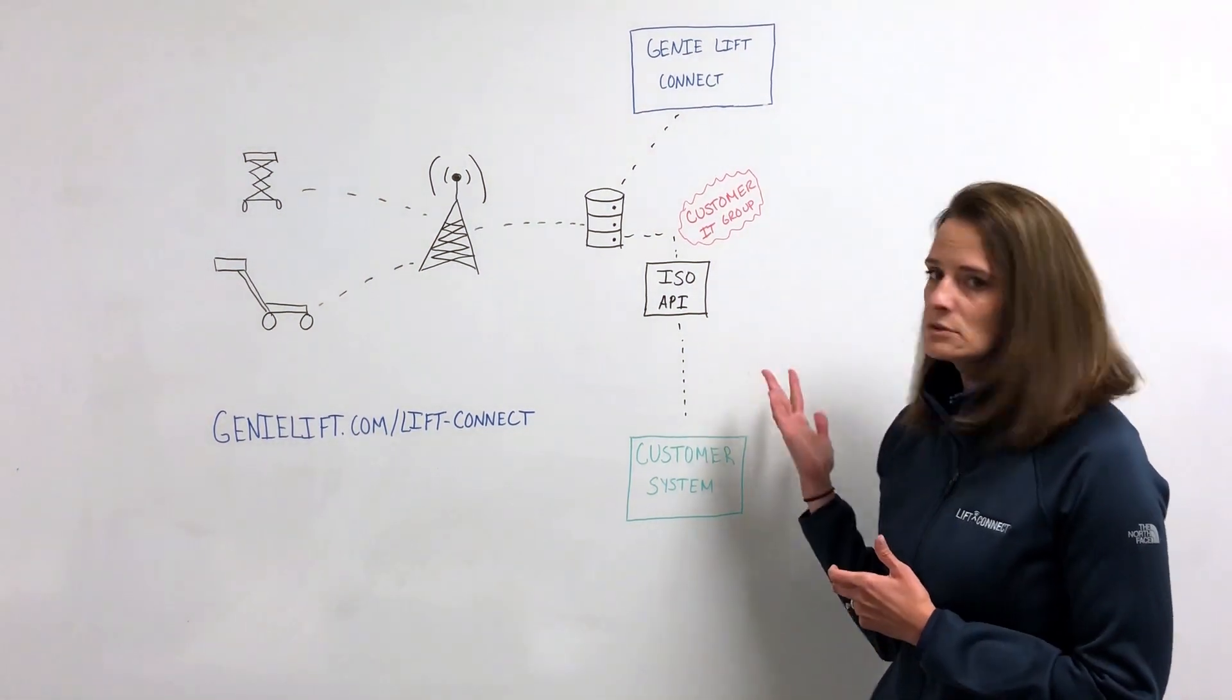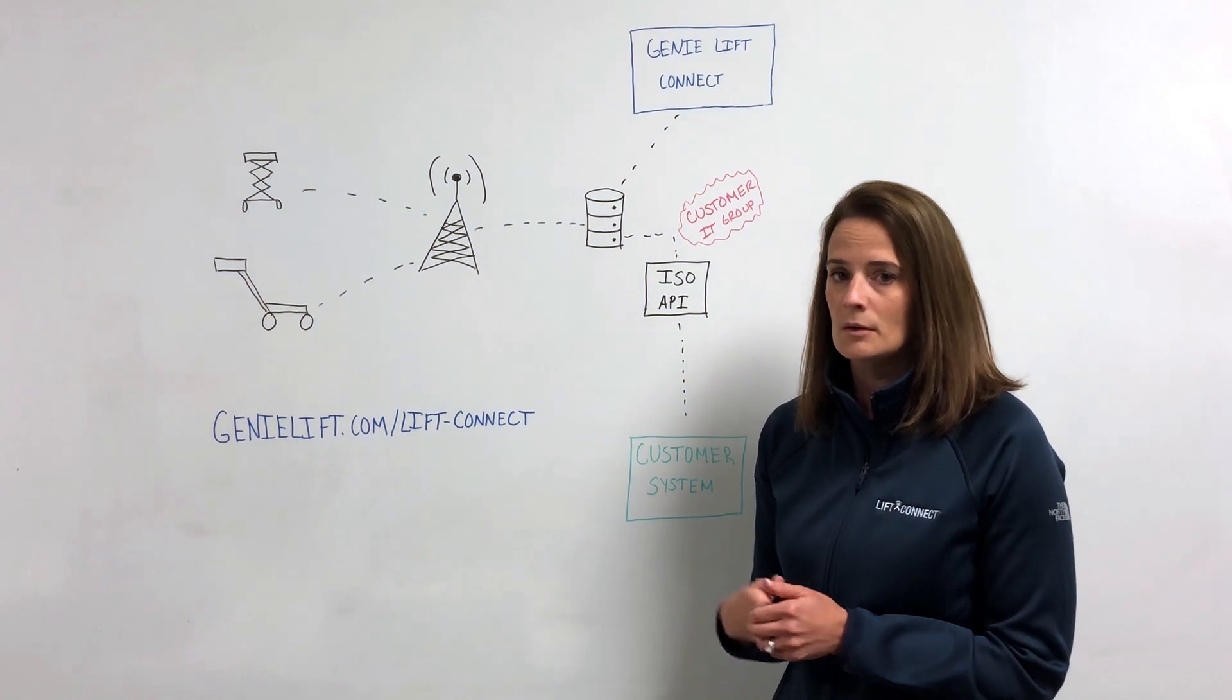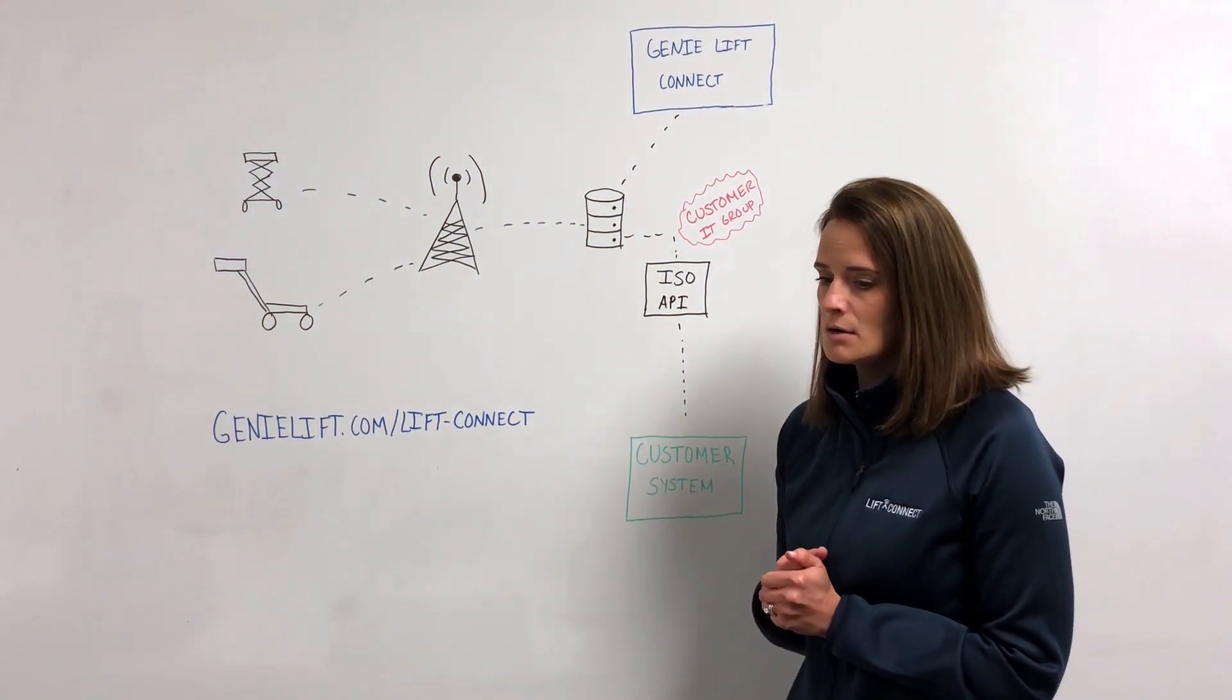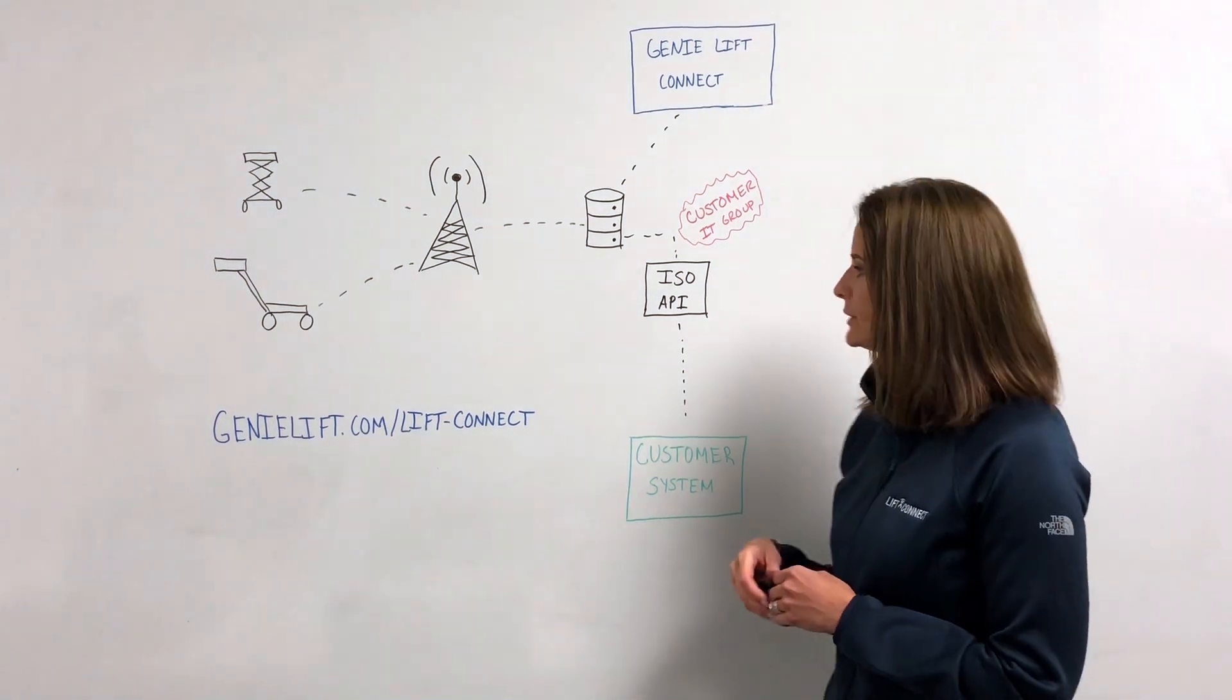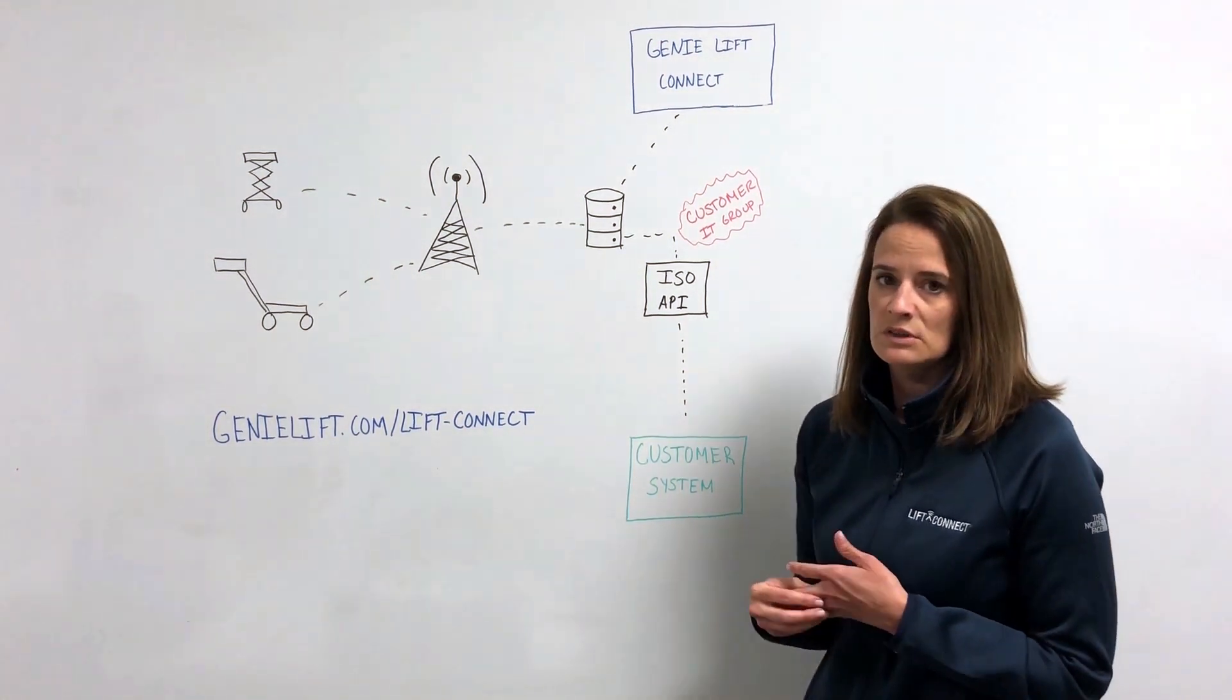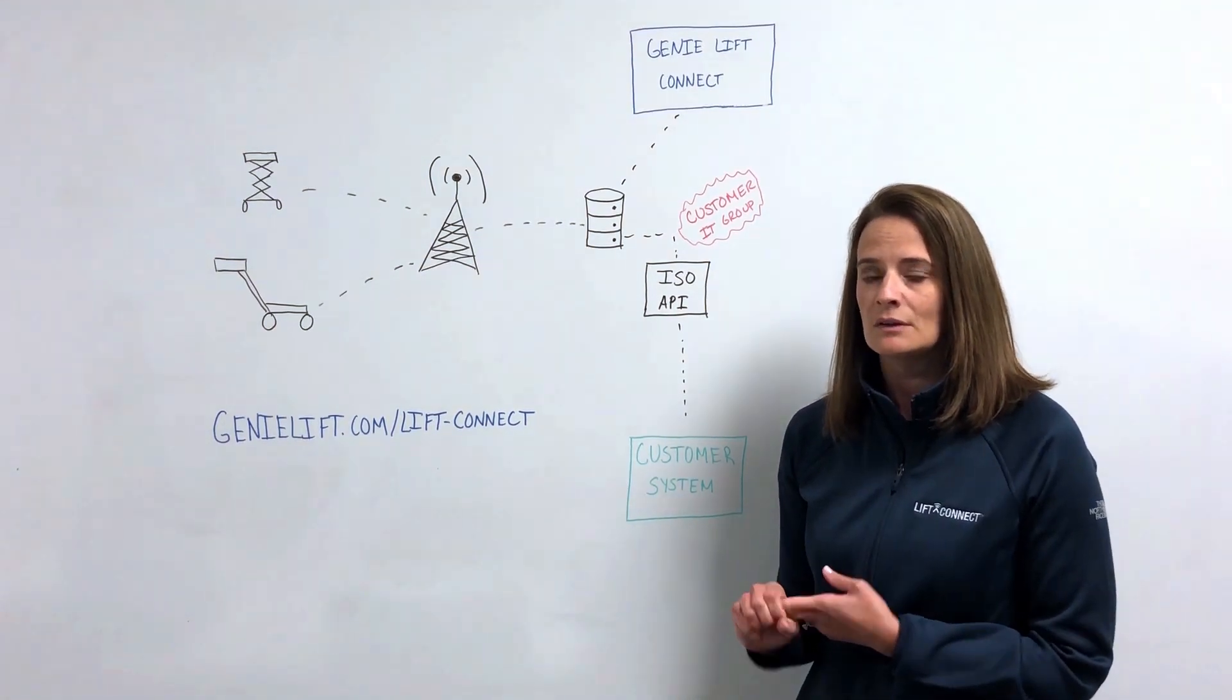So the way this works is customers let us know through the GenieLift.com LiftConnect website or through their sales representative that they want to leverage the ISO API. We email the customer's IT group credentials as well as documentation